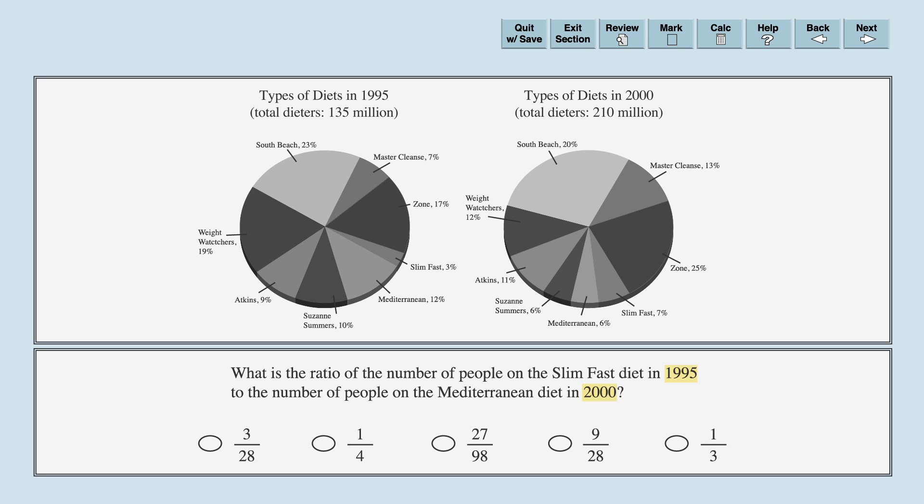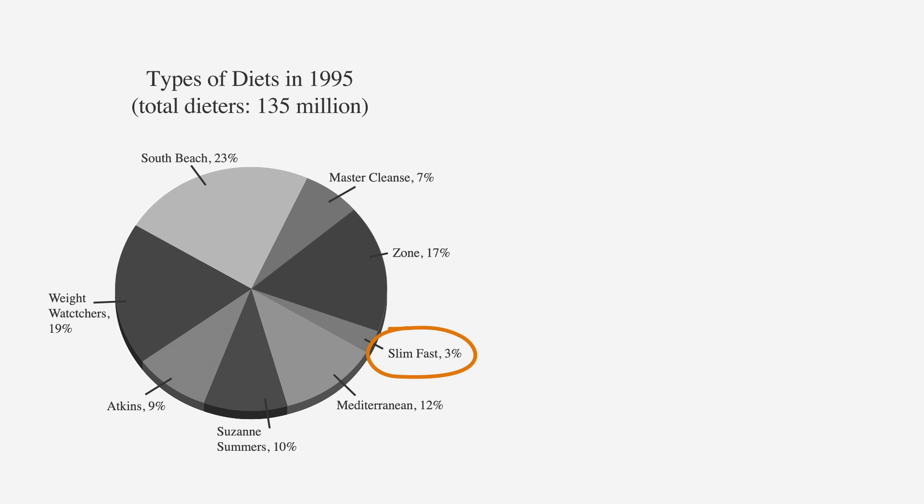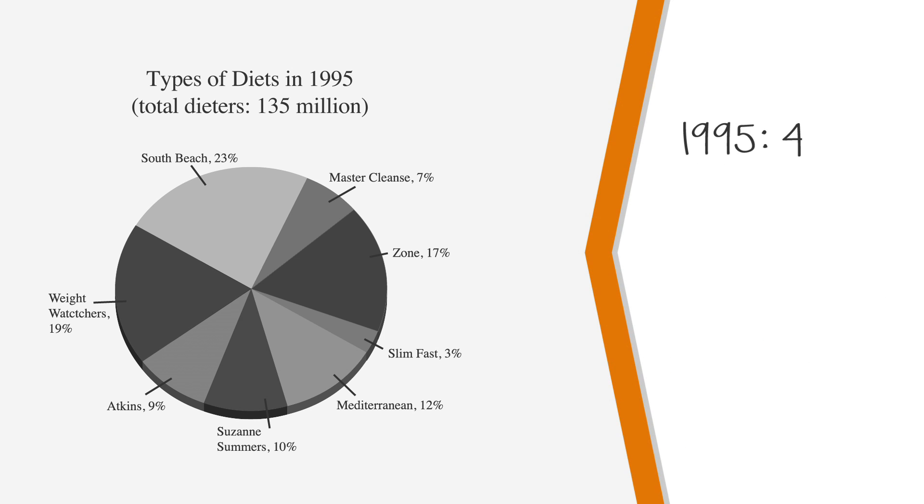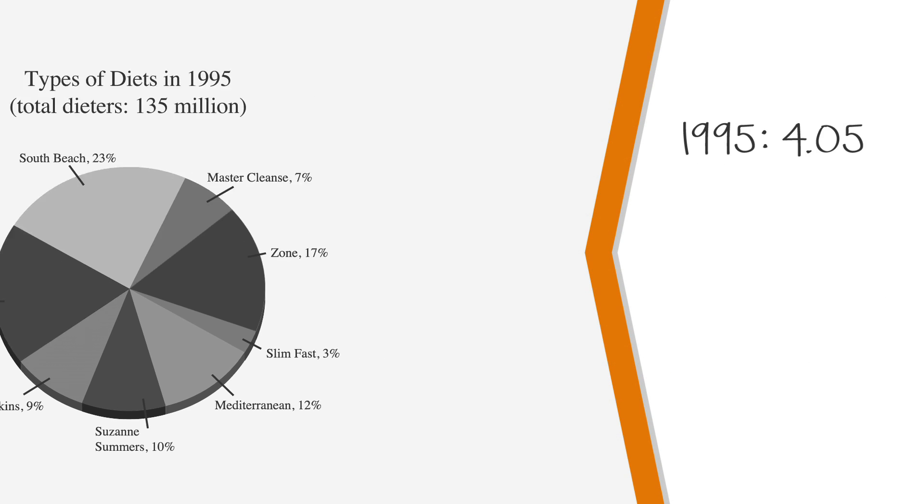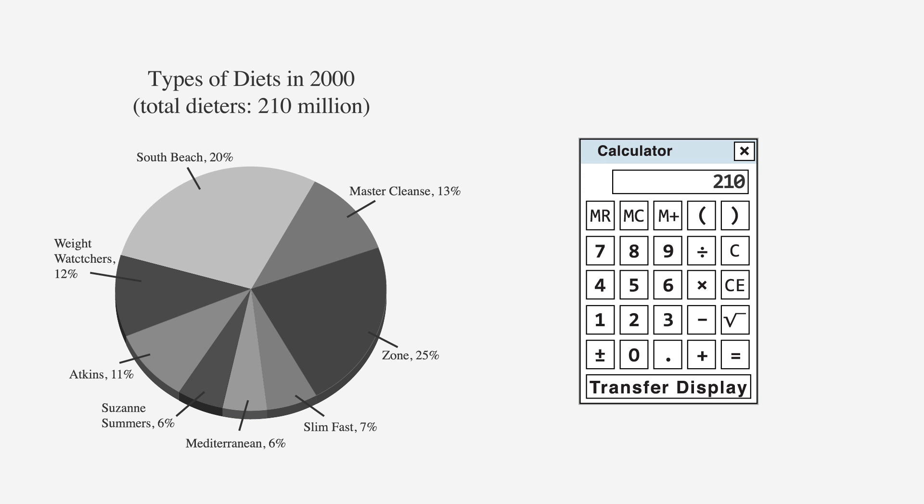Here, we're asked about both 1995 and 2000, so we'll need to look at both charts. 3% of 135 million dieters were on the SlimFast diet in 1995. Using our calculator, we get 3% of 135 is 4.05, so we'll make sure to write that down. In the year 2000, we see that 6% of 210 million dieters were on the Mediterranean diet. 6% of 210 is 12.6 million people.